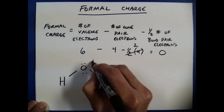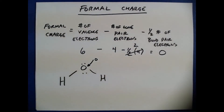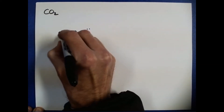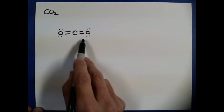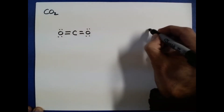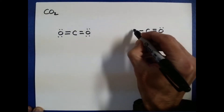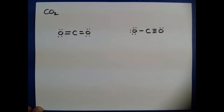So our formal charge for oxygen in water in this particular Lewis structure is zero. Now we're going to use the idea of formal charge to decide between which of two Lewis structures of carbon dioxide are better. There are two different Lewis structures that could potentially be drawn: in one case, both oxygens are doubly bonded to the central carbon, and in another case, one oxygen is triply bonded to the carbon while the second oxygen is singly bonded. We're going to use formal charge to help us decide which of these two is better.